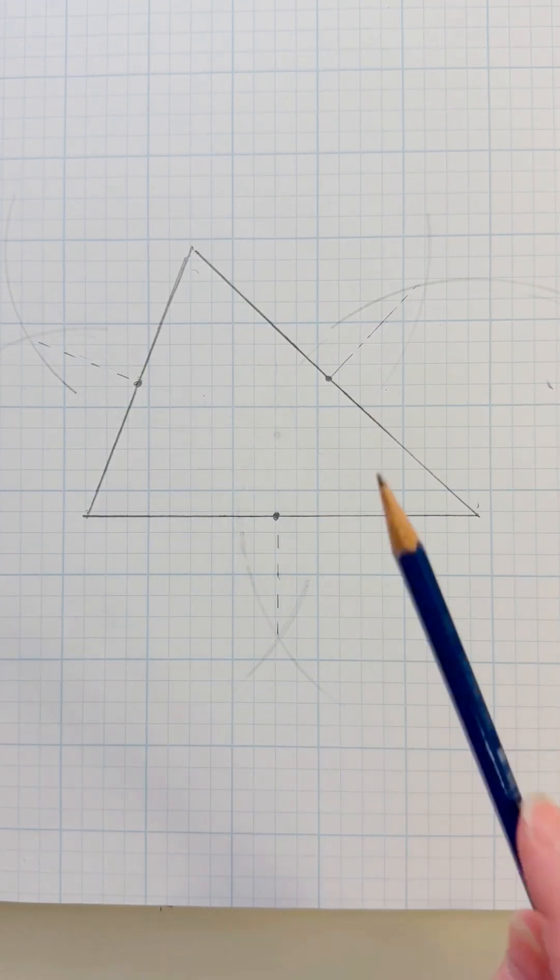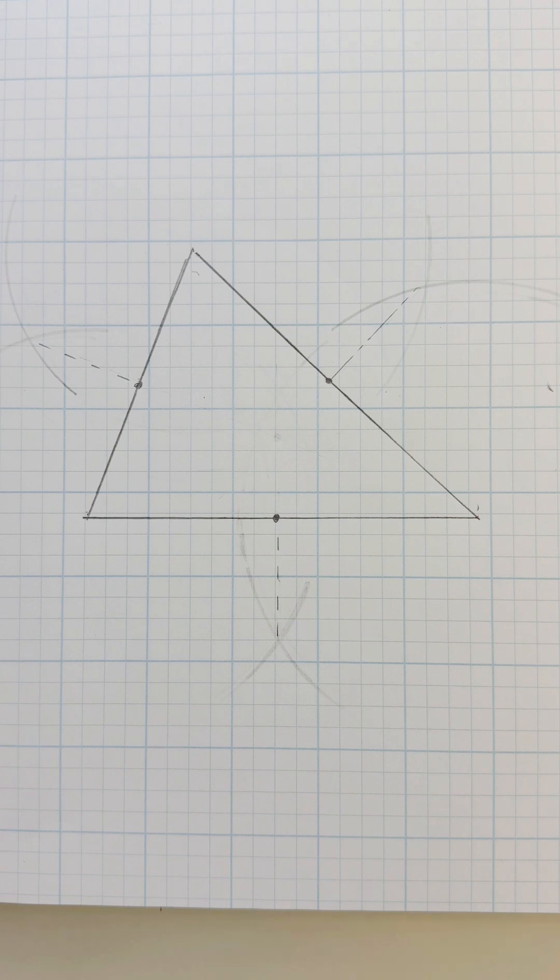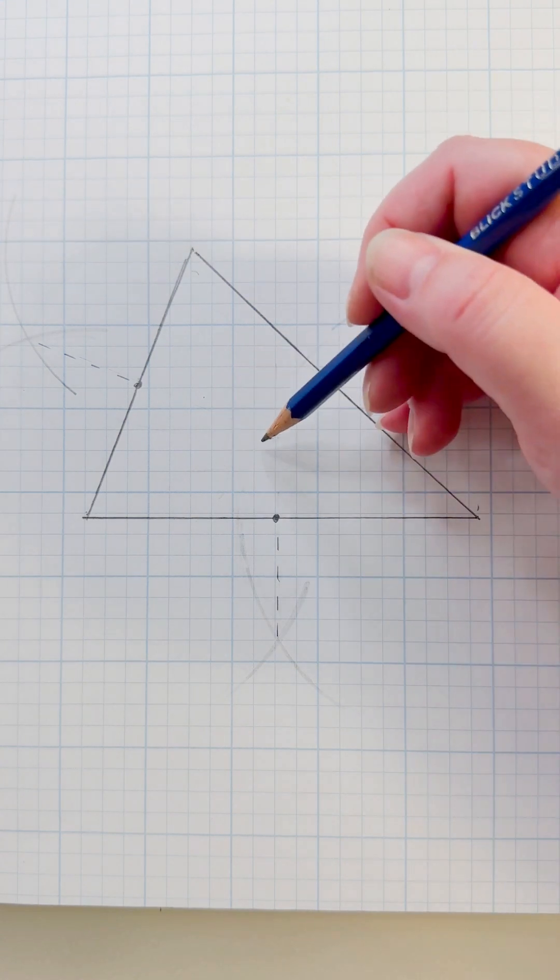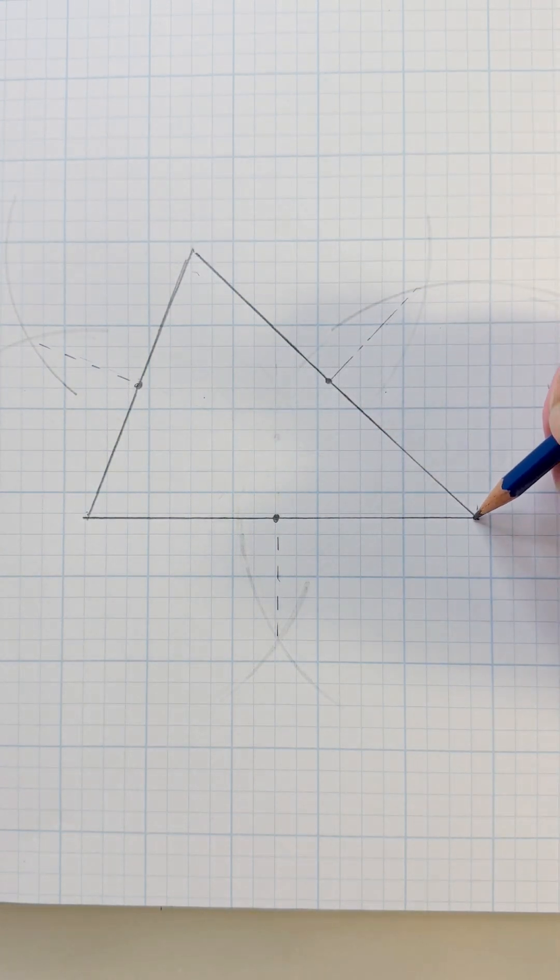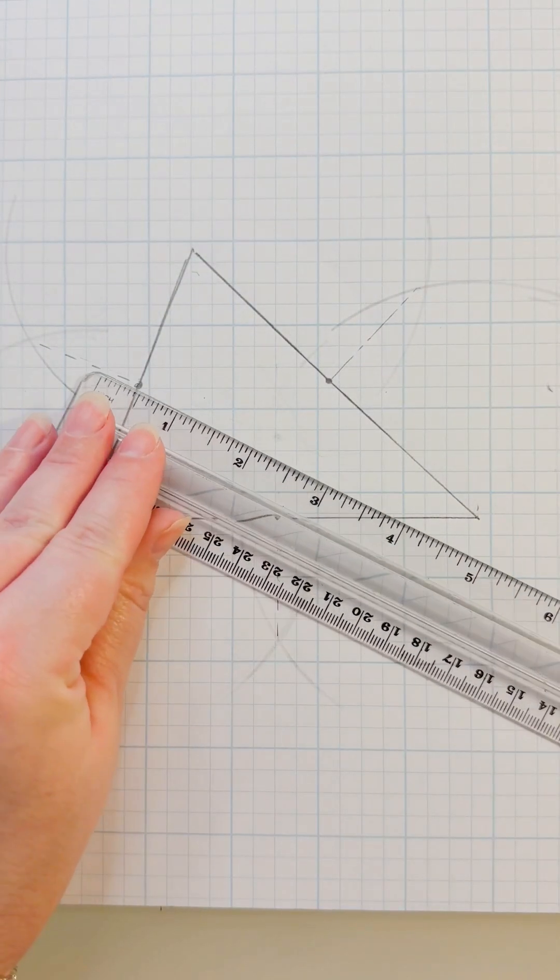As you can see, I tried this already once and I screwed it up, but anyway I'm going to show you the right way to do it. All right, so how we get this center point in here is we take one of the corners and we draw a line from the corner to the opposite midpoint, to the midpoint of the opposite line.